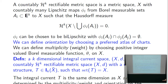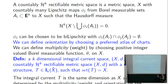A k-dimensional integral current space is a rectifiable metric space (X, d) with a current T — an integral current of dimension k in the sense of Ambrosio-Kirchheim on the metric completion of X — such that the set of positive density of T is X. We take the metric completion temporarily, define the integral current there, then shrink back to the set of positive density. We're not including the full support of T, which would be too large.